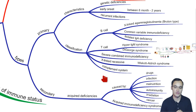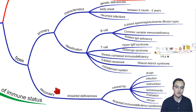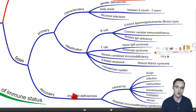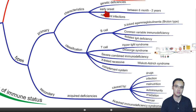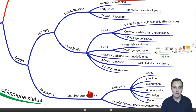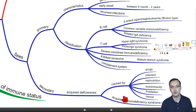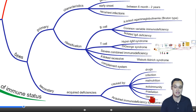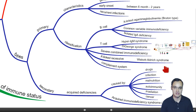So what are the types of immunodeficiency? They are primary and secondary. The secondary is an acquired deficiency, whereas the primary is a genetic deficiency. The primary has an early onset, so you have babies between six months and two years having recurrent infections. The acquired one includes, for example, acquired immunodeficiency syndrome — AIDS.